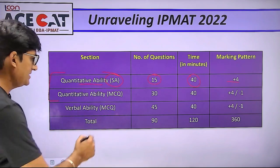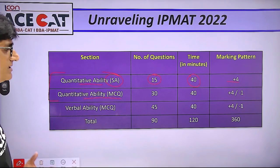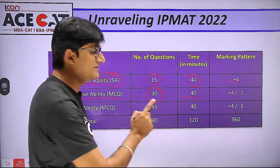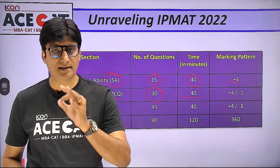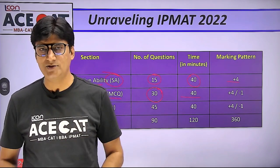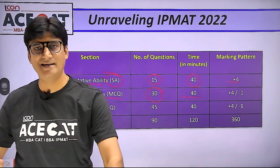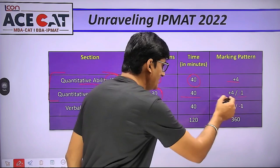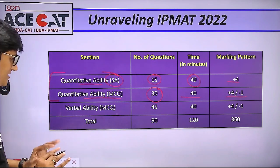Coming to the second section — Maths MCQs — 30 questions were given with 40 minutes of time. The best part of IPMAT is that sectional time limits are already divided, so you don't have a choice: you have to spend 40 minutes in a particular section. The marking pattern here was +4 and -1, so negative marking was there.